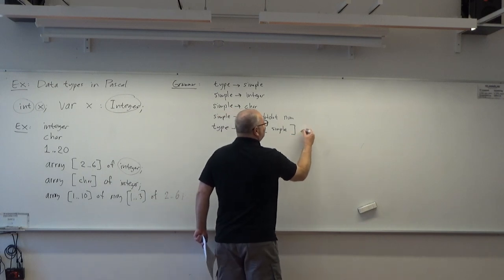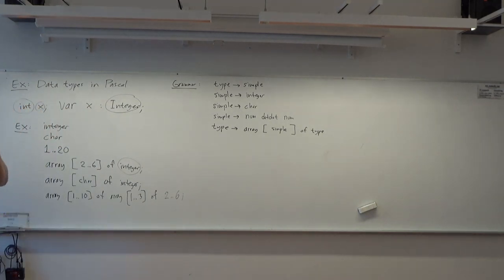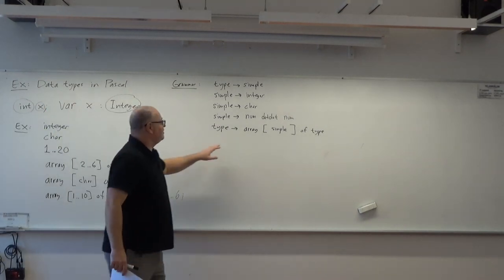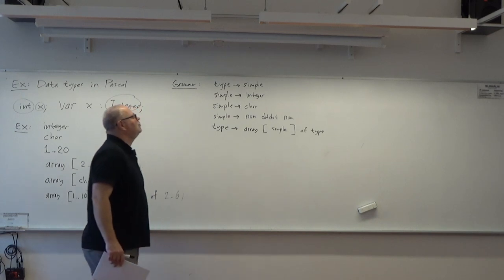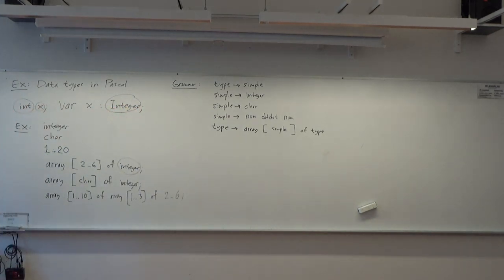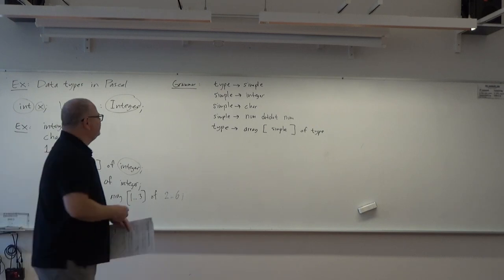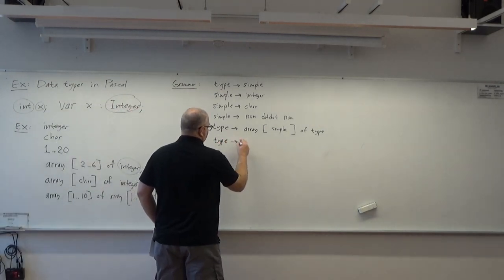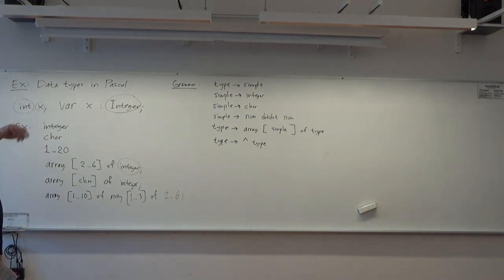A data type can also be an array: 'array[simple] of type'. The size of the array in the brackets can be a simple data type — either an interval num..num, char, or even integer. You can also have pointers, written with an up-arrow in Pascal, meaning pointer to type.